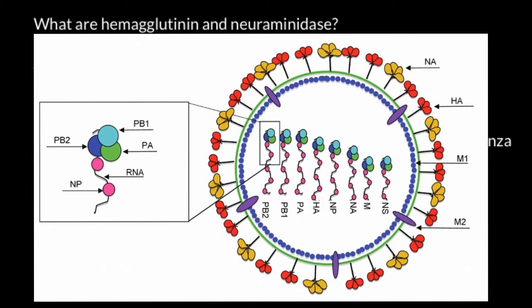Three fragments code for these proteins — PB1, PA, and PB2 — which make up the RNA-dependent RNA polymerase. Because this is a negative-sense RNA virus, in order to make the proteins the virus consists of, it first has to make a complementary positive strand, which would also serve as the messenger RNA strand and could be translated right away into protein.